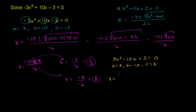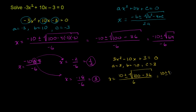Applying the quadratic formula again, we get x is equal to negative b — b is negative 10, so negative negative 10 is positive 10 — plus or minus the square root of b squared, which is negative 10 squared, which is 100, minus 4 times a times c. a times c is 9, times 4 is 36. So minus 36, all of that over 2 times a, which is 6. This equals 10 plus or minus the square root of 64, which is just 8, all of that over 6. If we add 8, we get 18 over 6, which equals 3. Or if we subtract 8, we get 10 minus 8 is 2, and 2 over 6 is 1 third.